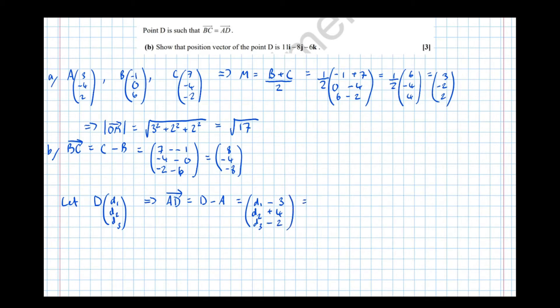and we know that that's going to be equal to BC equal to 8 minus 4 minus 8 so we've got three equations now, the I component equation, the J component and the K component so that means that D1 minus 3 equals 8 which means that D1 equals 11. D2 plus 4 equals minus 4 which means that D2 is minus 8 and D3 minus 2 equals minus 8 which means that D3 is minus 8 plus 2 which is minus 6.